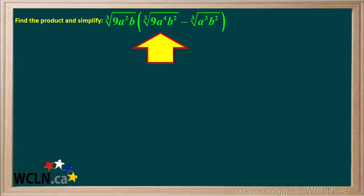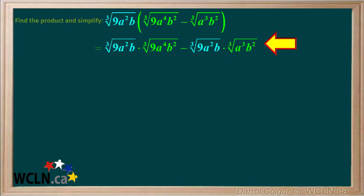Let's do another example. We're asked to find this product and simplify the answer. Notice we have cube root radicals. Because these have an odd index, we don't need to assume the variables are positive. We use the distributive property to clear the brackets, multiplying both terms inside the bracket by the cube root of 9a squared b, which was outside the bracket.